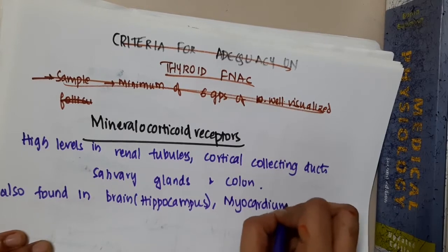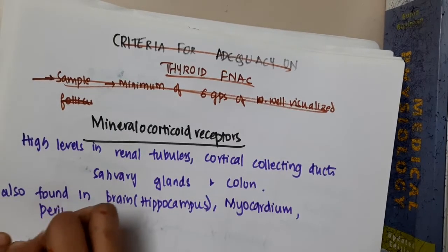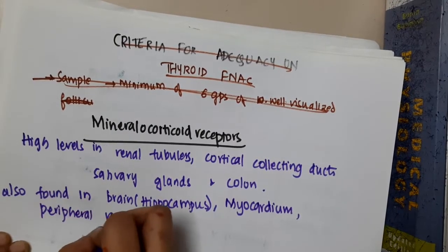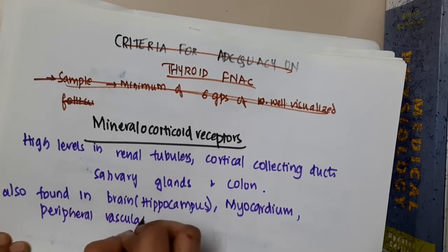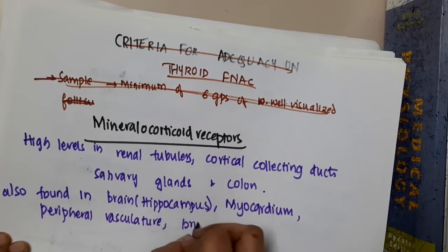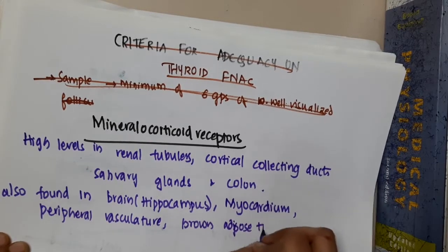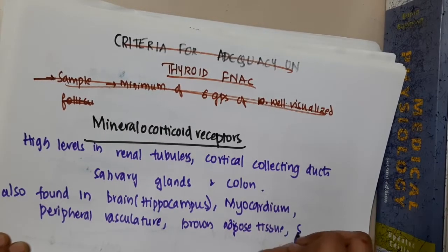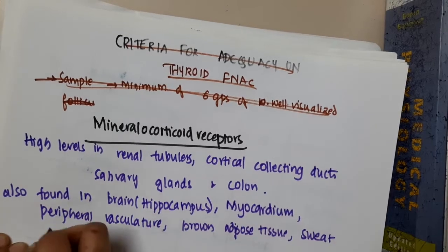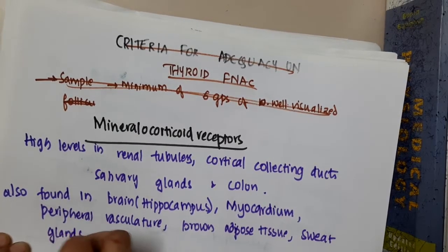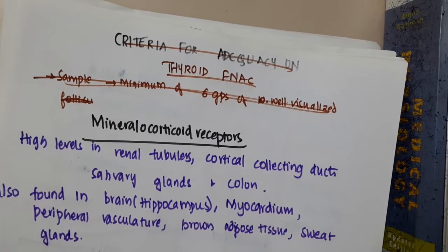They are also found in peripheral vasculature, brown adipose tissue, and sweat glands. These are the important points about mineralocorticoid receptors.